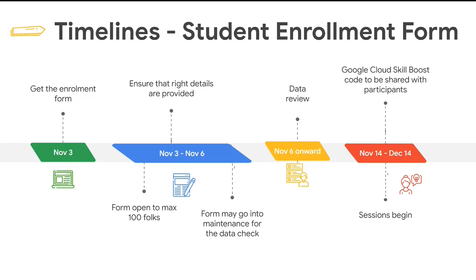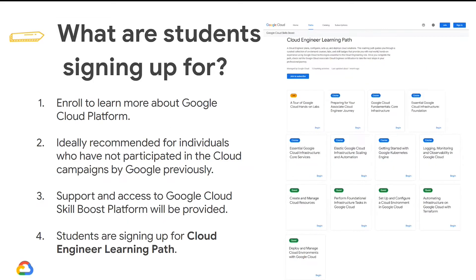The timeline to fill the form is November 3rd to November 6th. At most 100 entries will be accepted, and you have to make sure that correct details are provided. The data will be checked and incorrect forms might be rejected. By November 14th, you'll get the access code for the Google Cloud Platform labs, and the campaign may go on till December 14th.